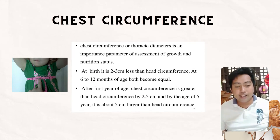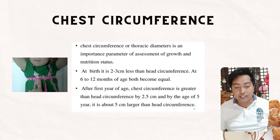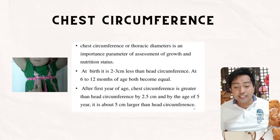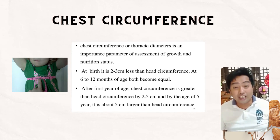Chest circumference, or thoracic diameter, is an important parameter for assessing growth and nutritional status. At birth, it is 2.3 cm less than head circumference. At 6 to 12 months of age, both become equal. After the first year of age, chest circumference is greater than head circumference by 2.5 cm, and by the age of 5 years, it is about 5 cm larger than head circumference.